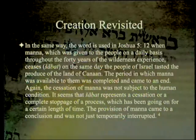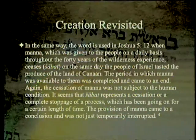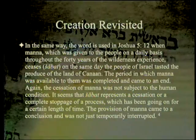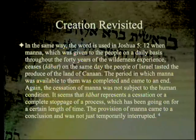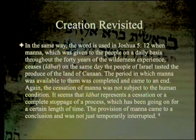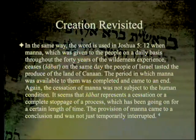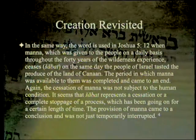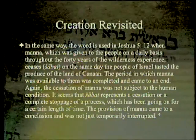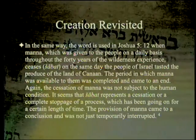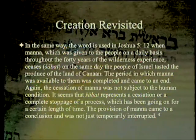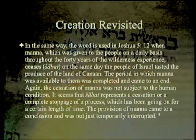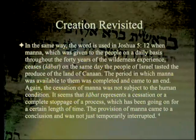In the same way, the word is used in Joshua 5:12, when manna — which was given to the people on a daily basis throughout the 40 years of the wilderness experience — ceases, 'shabbat,' on the same day the people of Israel taste the produce of the land of Canaan. The period in which manna was available to them was completed and came to an end. The cessation of manna was not subject to the human condition.